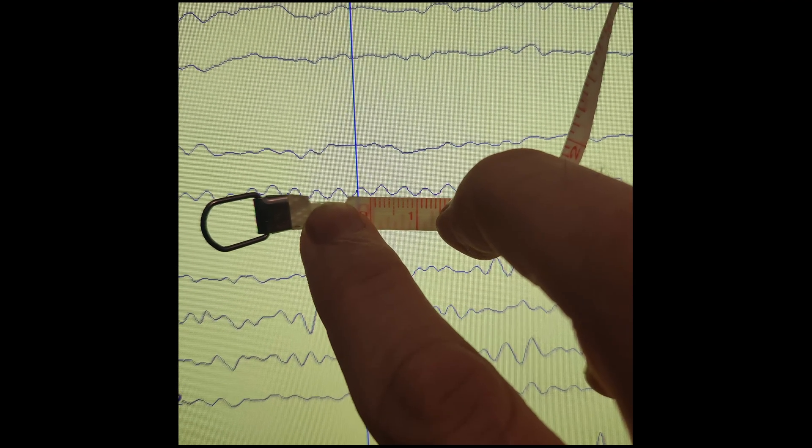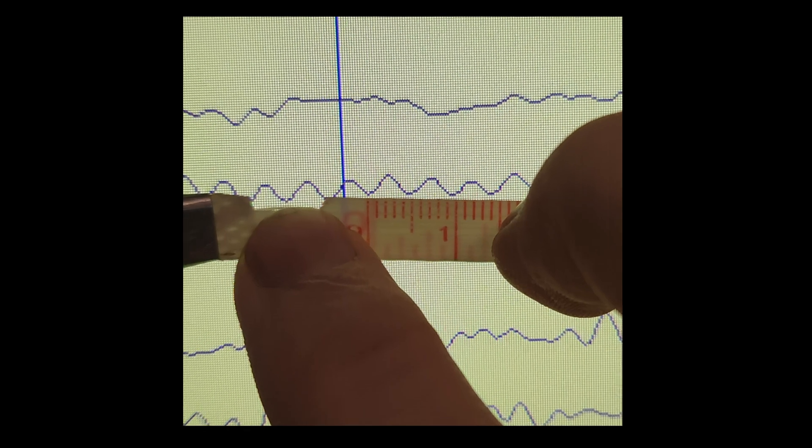We're going to zoom in just a bit more and we're going to look at that wave, the first wave after that blue vertical line. So not the one that's intersected by the blue vertical line. If we measure this wave, as I measured the wave with a ruler, we're going to measure across the baseline of the EEG channel.